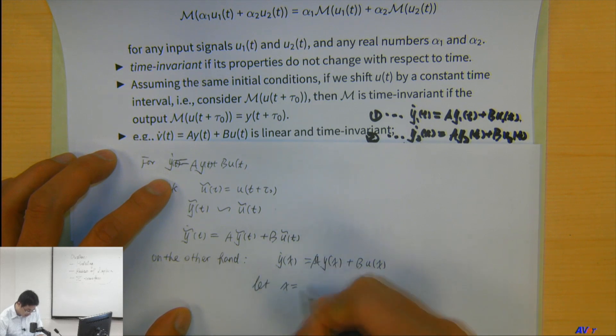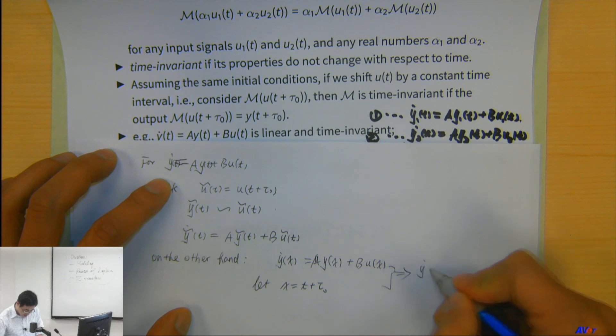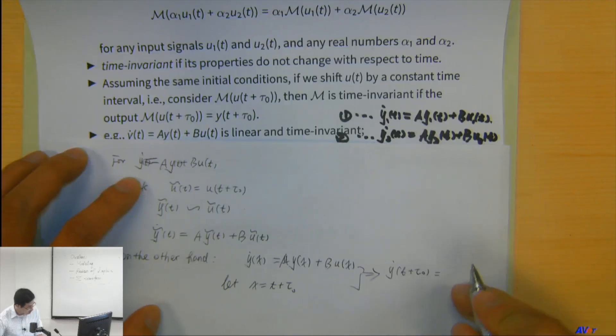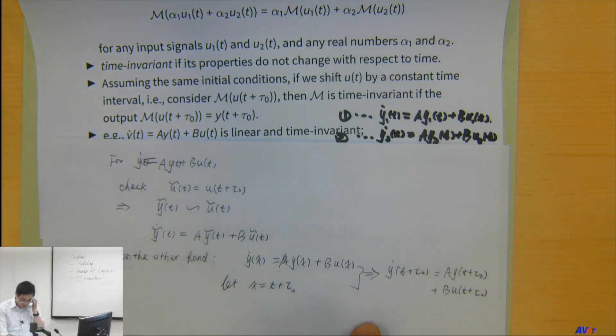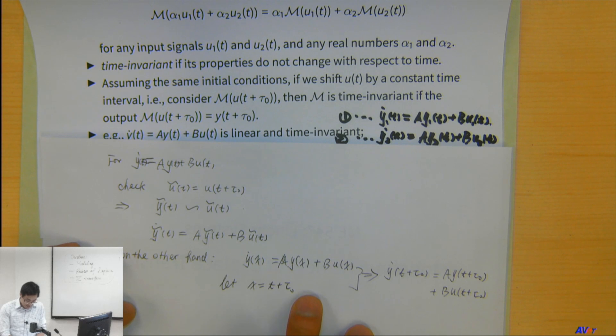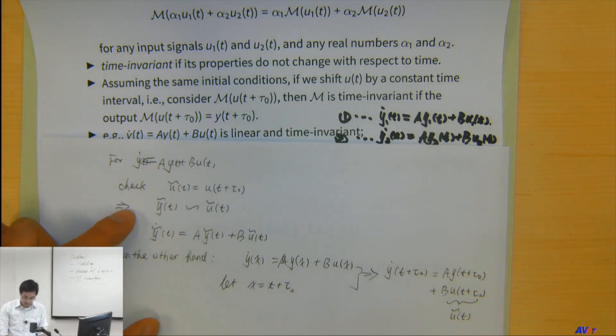And if I let x be equal to t plus tau, it's just a change of variable, then this should all work out. It must be that y dot(t + tau) equal to a y(t + tau) plus b u(t + tau). This holds just a change of index, change of variables in the representation. All right, so look at this one. So this is essentially my u tilde, my newly considered input.